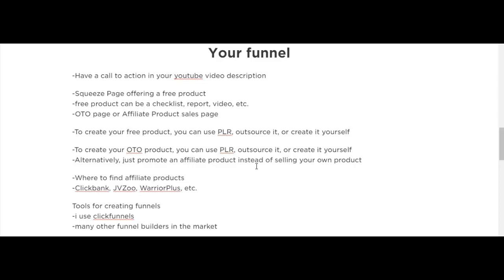PLR products are created by others who then sell the rights for you to edit and resell or give them away, depending on the license. The next step of your funnel is the OTO or upsell page — once leads sign up, you present them with a product to buy, which you created, outsourced, or acquired PLR rights to. Alternatively, you can direct leads straight to an affiliate product sales page. Affiliate networks to consider include ClickBank, JVZoo, and WarriorPlus.